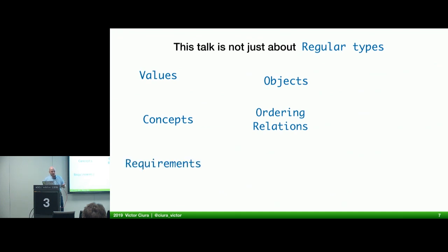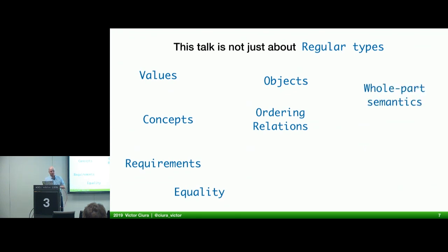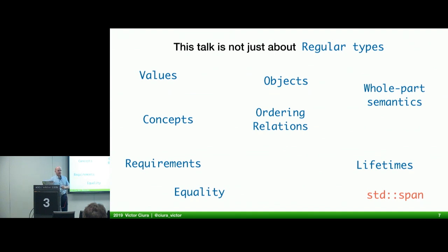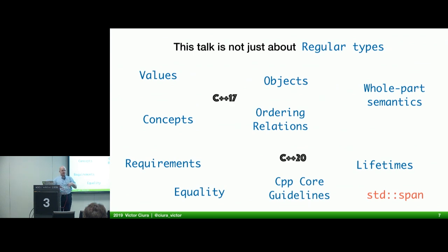Ordering relations, requirements on types, about equality — which you'll see is a difficult subject to define properly — about whole-part semantics for objects, about object lifetimes, about standard span because it's in the title, about CPP core guidelines, and we shall see bits and pieces of these ideas in C++17, C++20, and even stuff coming later on.